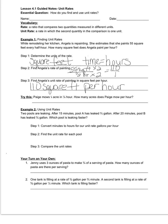To solve this, I know that one-fourth of an hour means there are four one-fourths in one hour. So I multiply one-fourth by four to get one hour. That means I also take one-sixth times four to find how many acres she mows, which gives four-sixths. Four-sixths reduces to two-thirds. So Paige's unit rate is two-thirds of an acre per hour.